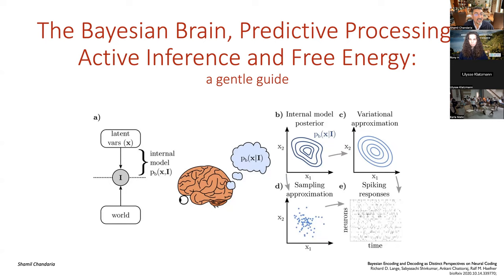I think it's kind of an honor for me to be able to present probably what I would say is one of the most interesting and important attempts at some sort of a general theory of what's going on in the brain from an algorithmic perspective: the Bayesian brain, predictive processing, active inference, and the free energy principle.